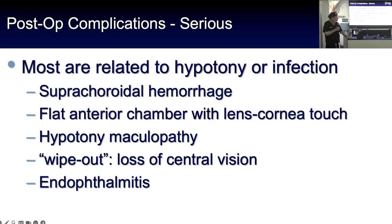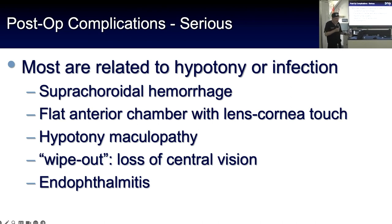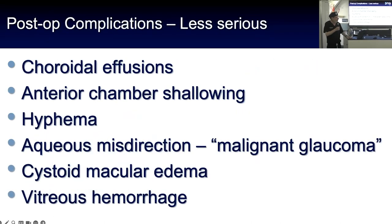The serious complications we worry about are suprachoroidal hemorrhage, flat anterior chamber with lens-cornea touch — I'm less concerned about iris touch, but if the lens is flat, you're going to lose endothelium in the very center. You can always worry about hypotony maculopathy, wipeout syndrome, and endophthalmitis. Less serious complications include choroidal effusions, anterior chamber shallowing, hyphemas that are not uncommon early on, and CME and vitreous hemorrhage.